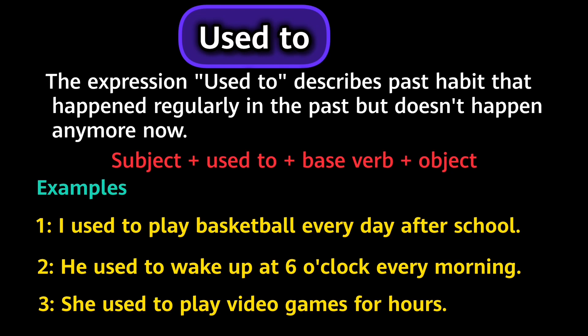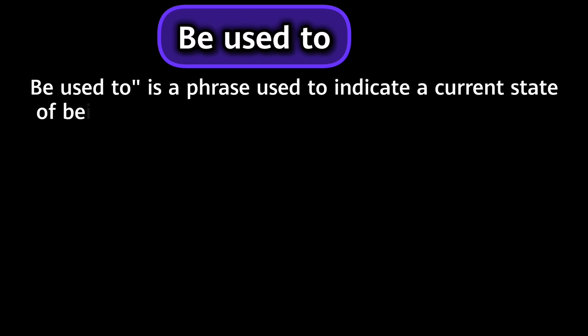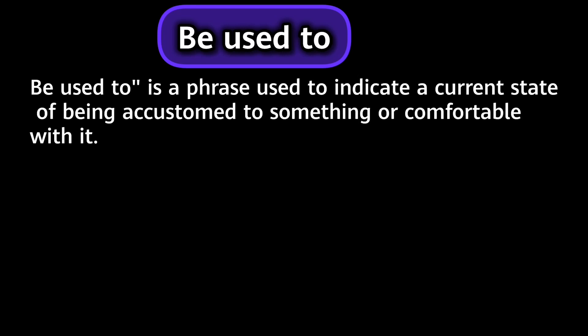While on the other hand, the expression 'be used to' can be defined as: a phrase used to indicate a current state of being accustomed to something or comfortable with it. Simply, it means this expression is used when we talk about the current situation where we have adjusted to something that might have been initially challenging or unfamiliar for us. In other words, it refers to the process of becoming accustomed or comfortable with something that was initially unfamiliar, challenging, or even unpleasant. It highlights the change within the individual that allows them to accept and adjust to the new situation.